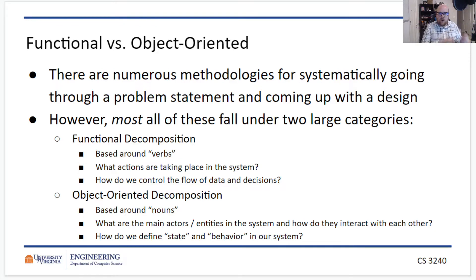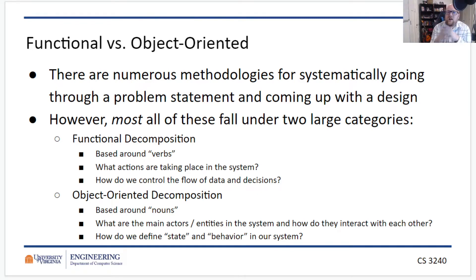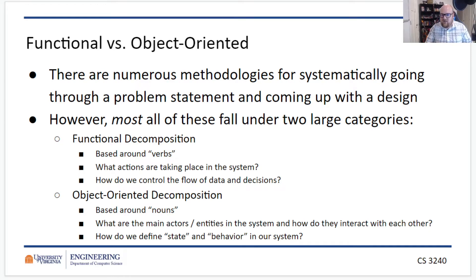Broadly, there are two kinds of decomposition: functional and object-oriented. When talking about functional decomposition, we base it around the verbs in the problem statement — something like 'for each employee, generate a paycheck.' That breaks down into a lot of different sub-steps, and each module we design is based on actions the system needs to take. We can also use those modules to break down things like control flow and decisions that need to be made.